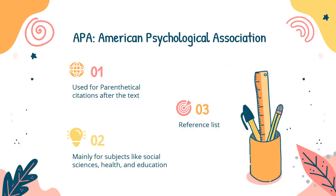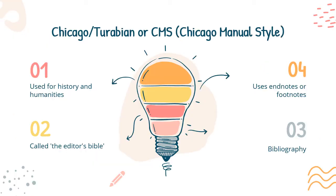In APA — that is American Psychological Association — used for parenthetical citations after the text, mainly for subjects like social science, health, and education, ending with a reference list.